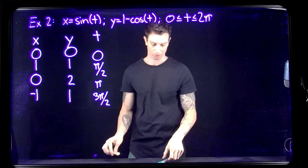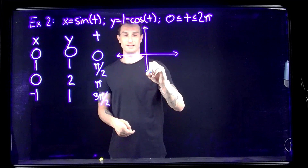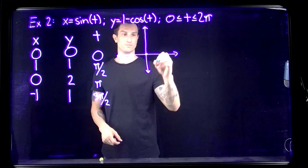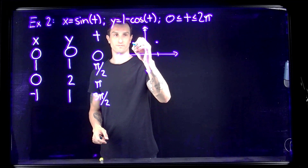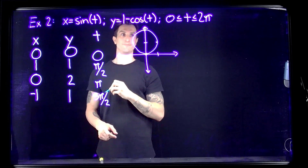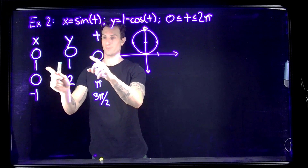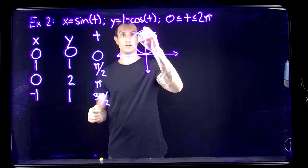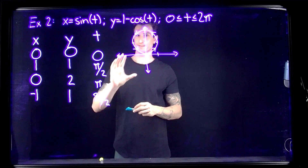Maybe if we see sine and cosine, the shape of the graph should seem somewhat familiar. We plot (0,0), (1,1), (0,2), and (−1,1), and we have a circle. Before we forget, our t is telling us the direction we're traveling — from (0,0) to (1,1) to (0,2) to (−1,1) and continuing that way.